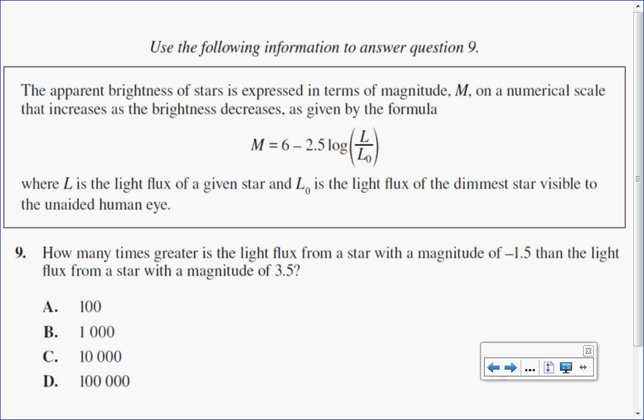Let's use our formula, substituting M = −1.5 to get an expression, then M = 3.5 to get another expression. For the first one: −1.5 = 6 − 2.5 log(L/L₀).